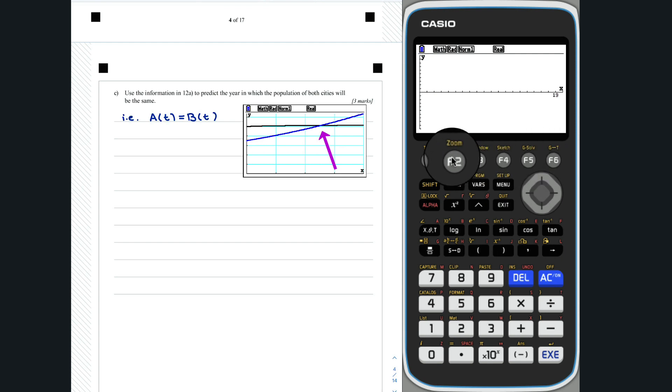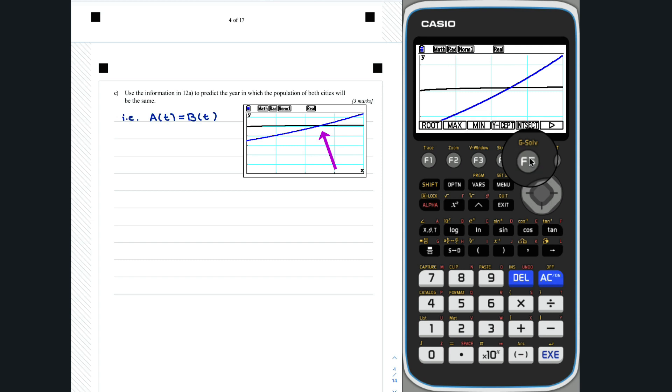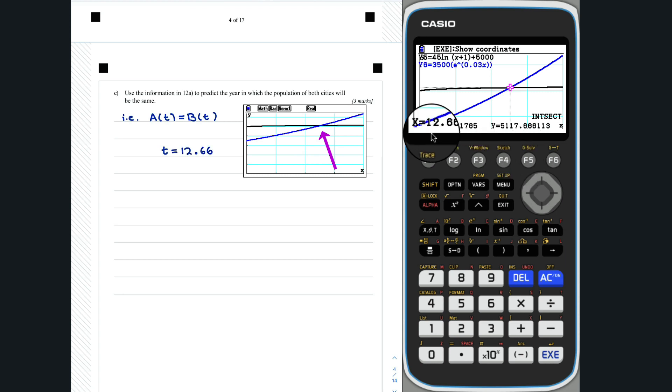Zoom auto can be found under f2 and then f5. We can now find the intersection of the two graphs by going g-solve intersect. So, we see that t is equal to 12.66. We know that in the year 2028, t was equal to 10. So, during the year 2030, the populations of city A and city B are predicted to be the same.